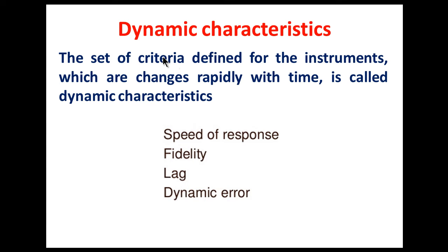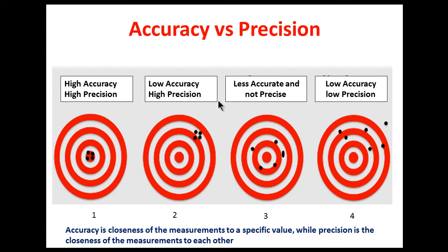Next we have dynamic characteristics. The set of criteria defined for the instrument which change rapidly with time — that is considered as dynamic characteristics. Examples of dynamic characteristics are speed of response, fidelity, lag, and dynamic error. We will first learn the static characteristics.